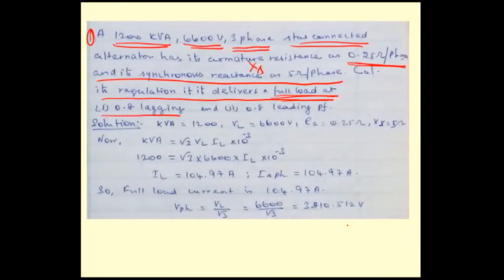First case: they are asking percentage regulation at 0.8 power factor lagging. Second case: voltage regulation at 0.8 power factor leading. From that, you can first calculate the full load current, because they are asking regulation at full load.